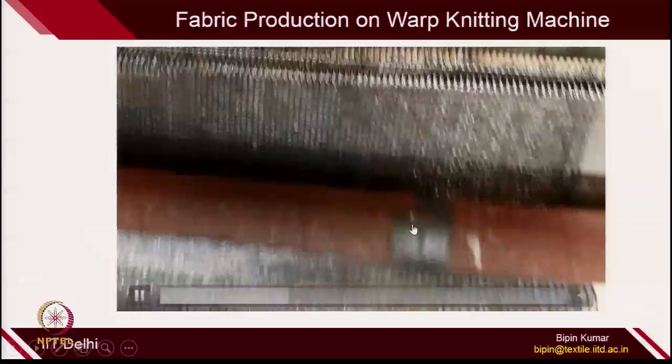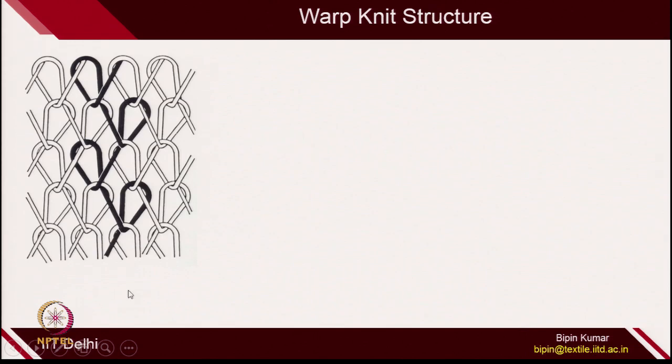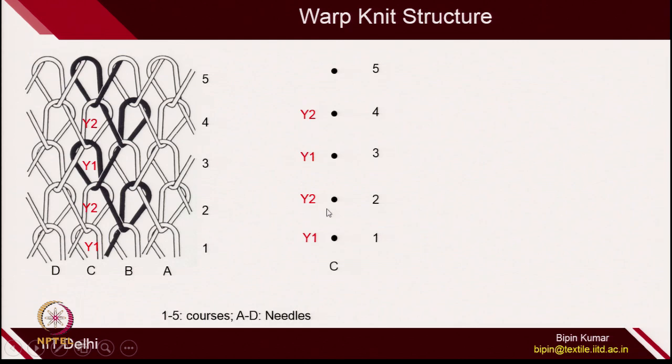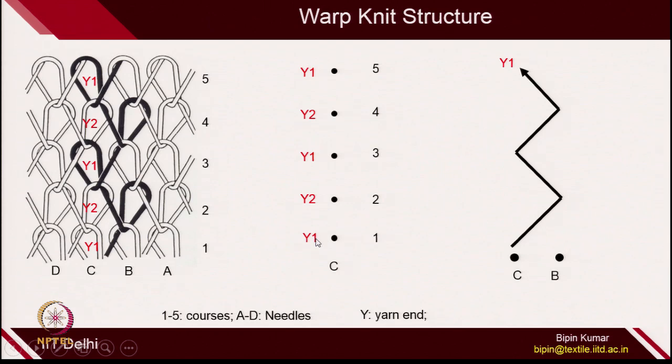I want to recollect the yarn path followed in a warp knit structure. For the same needle, in every alternating course, it is catching different yarns. For example, needle C catches yarn Y1 in the first course, yarn Y2 in the second course, then Y1 again in the third course. These yarns are provided by guides to the needle, and the guides take the yarn from one needle to the other.